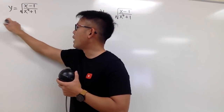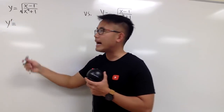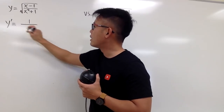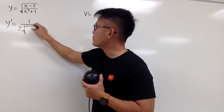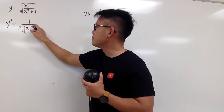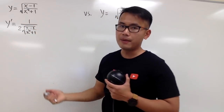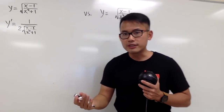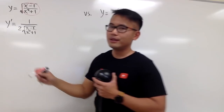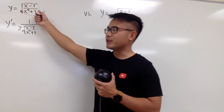I will first write down y' for the derivative, and we know that the derivative of a square root of something is 1 over 2 square root, and then you just keep the inside as it is — x minus 1 over x to the fourth power plus 1, like this, for now. And then the chain rule says we have to differentiate the inside, but the inside is a quotient, so we have to use the quotient rule.